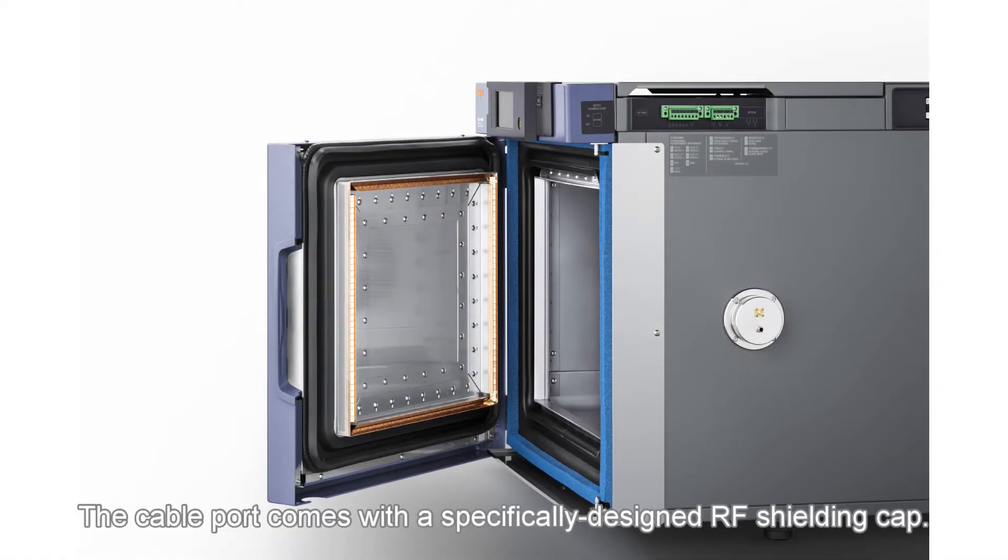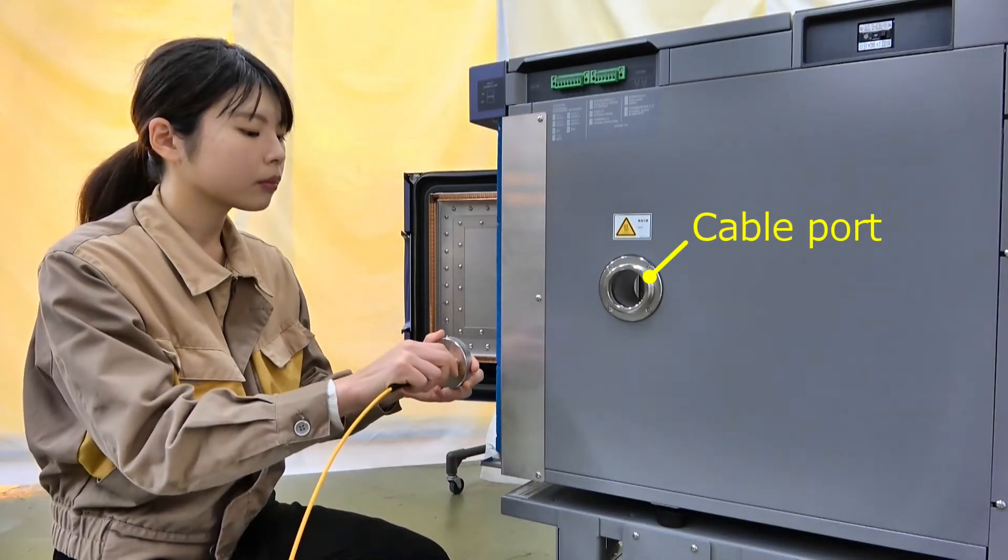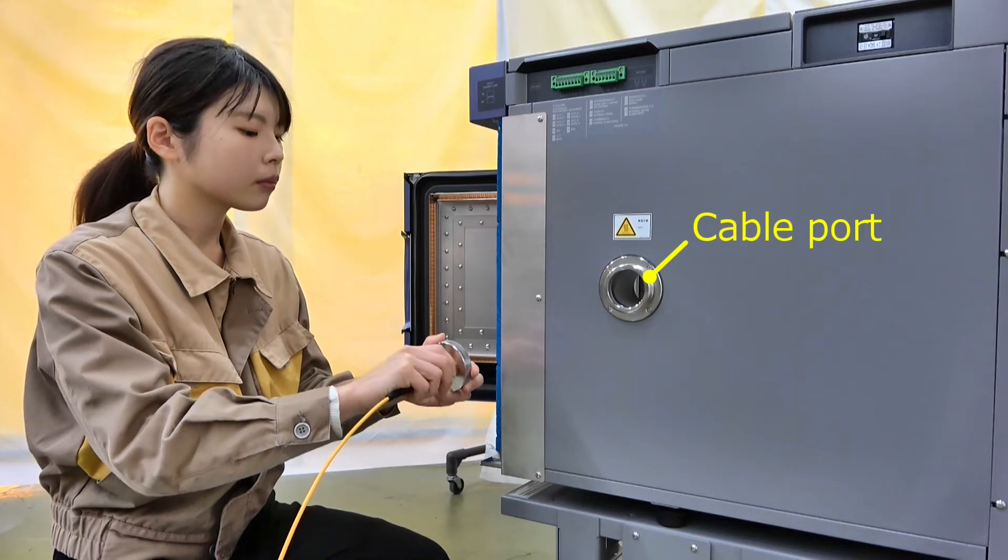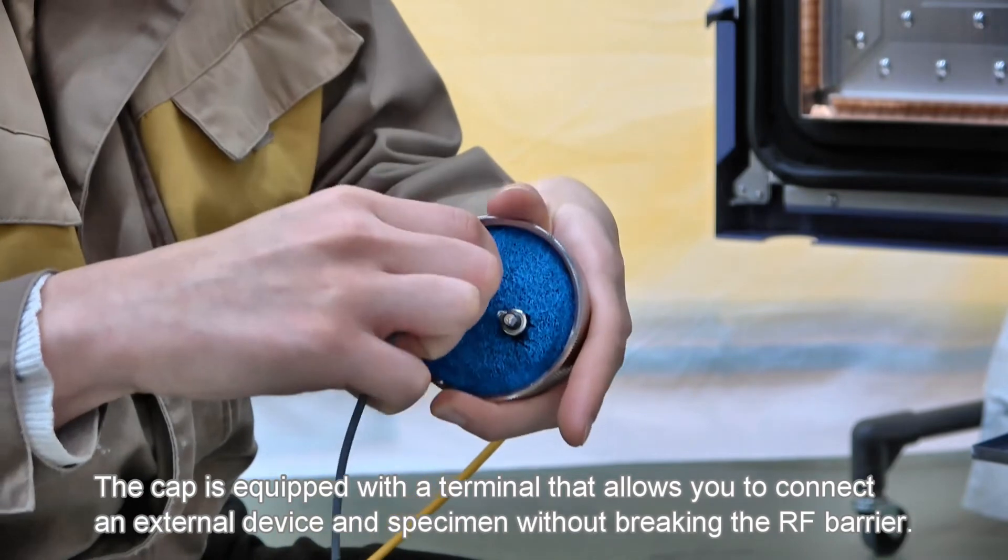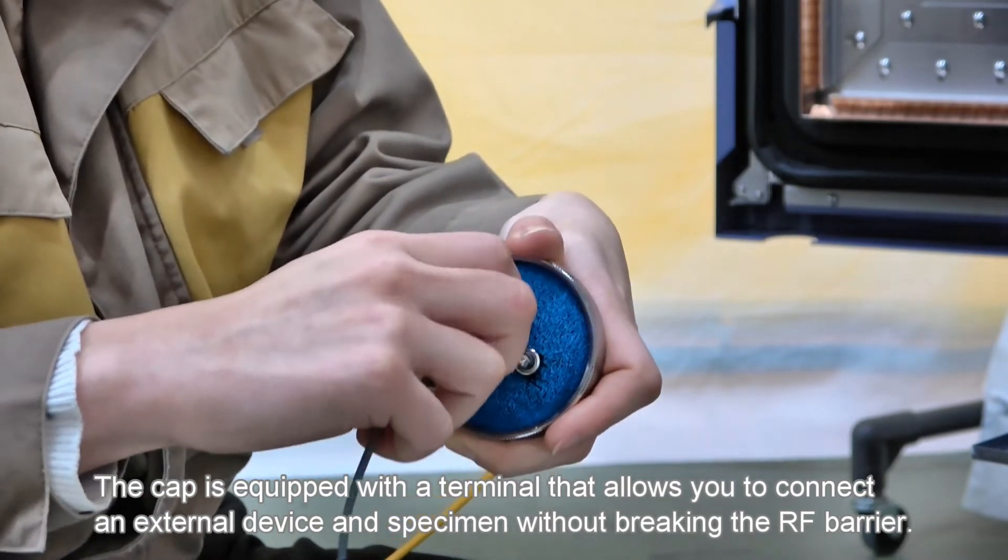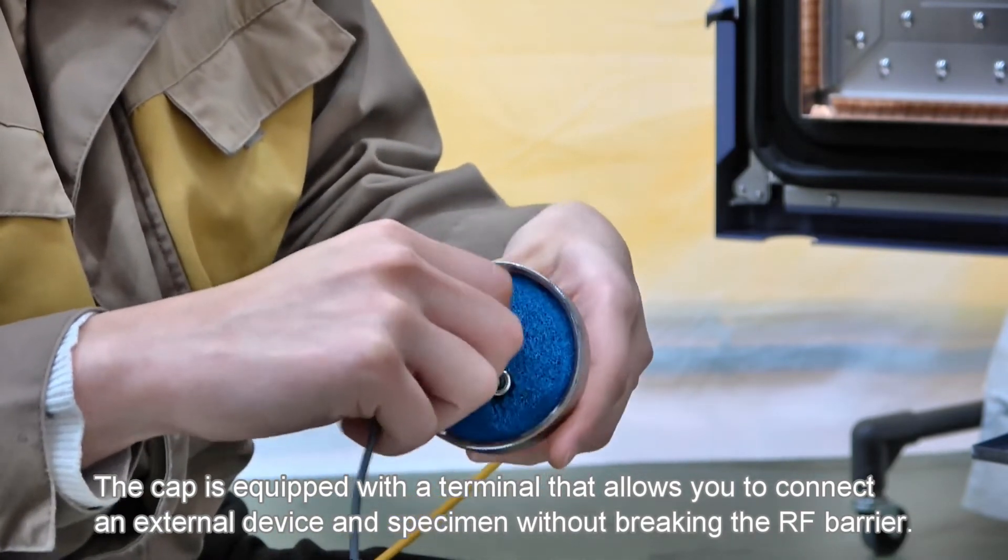The cable port comes with a specifically designed RF shielding cap. The cap is equipped with a terminal that allows you to connect an external device and specimen without breaking the RF barrier.